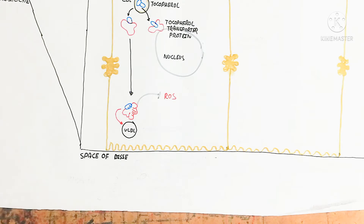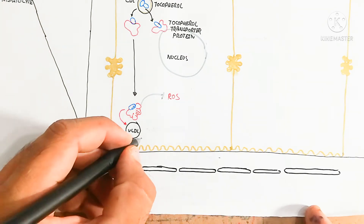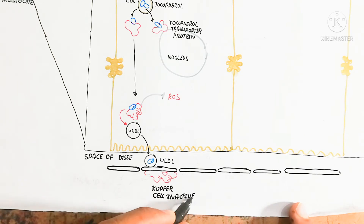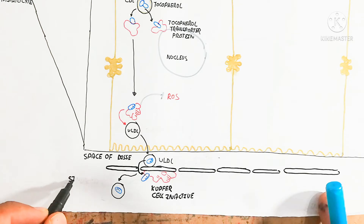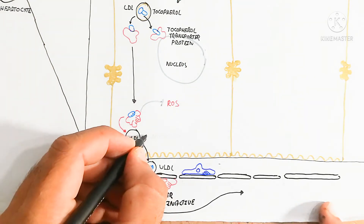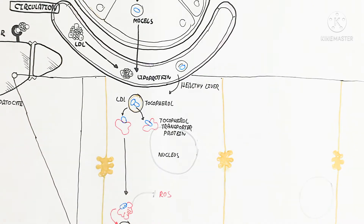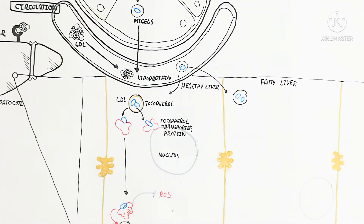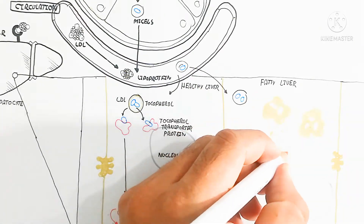VLDL containing tocopherol enters the space of Disse, as shown in the figure. The VLDL containing tocopherol then enters the Kupffer cells, which become inactivated because the free radicals are accepted by vitamin E, resulting in less inflammation. This tocopherol-containing VLDL then transports to other tissues to remove free radicals caused by oxidative stress.